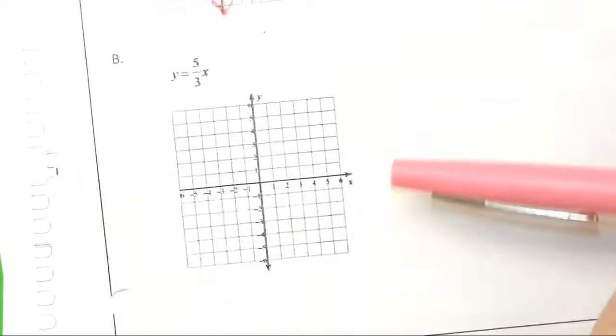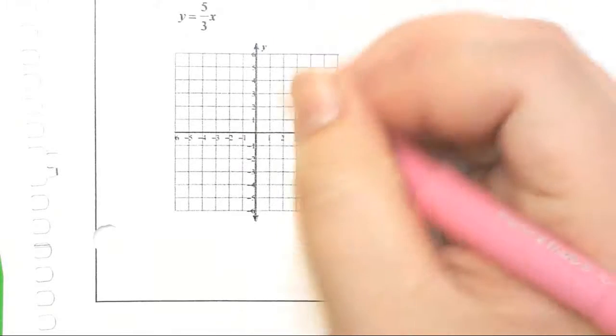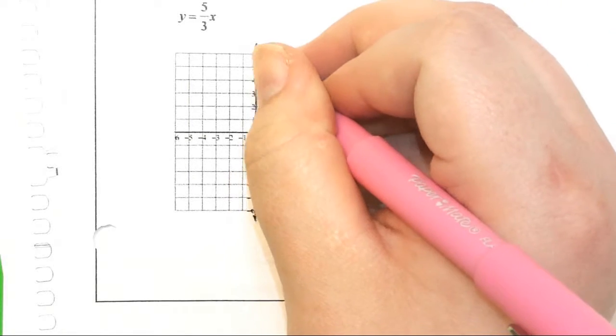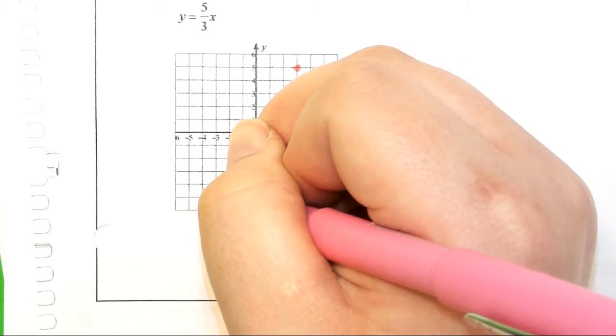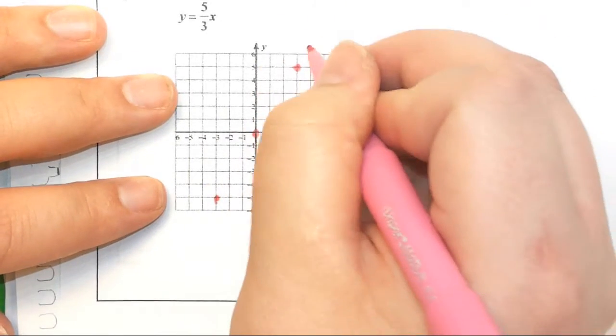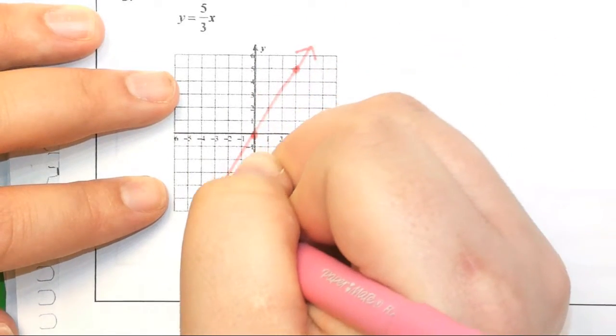5 thirds x, our intercept is 0. We go up 5 over 3, down 5 over 3. We connect our dots. We've got a line.